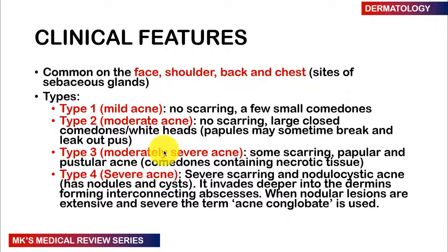The clinical features of acne are most commonly seen on the face, shoulders, back, and chest — the sites of sebaceous glands. Acne is divided into four types: type 1 is mild, type 2 is moderate, type 3 is moderately severe, and type 4 is severe.